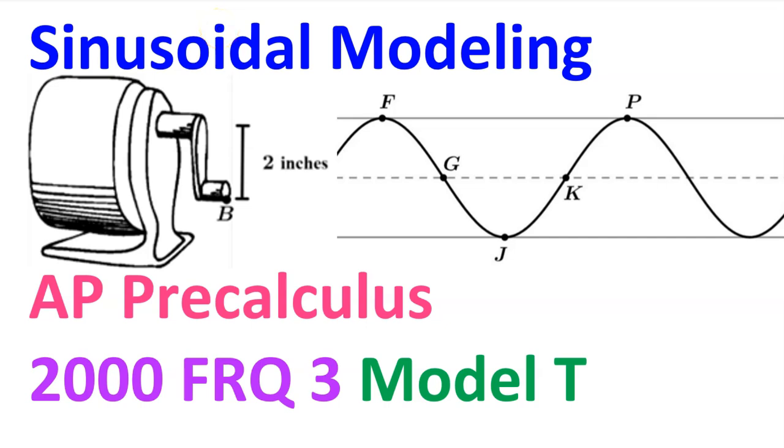There will be four free response questions on the AP Precalculus exam. This practice problem is modeled after FRQ3. Let's pretend it's from the 2000 AP exam. It's mostly about sinusoidal modeling, which means modeling a scenario using a sine function or a cosine function.